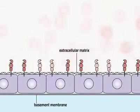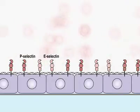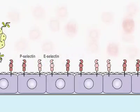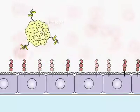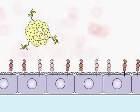Blood vessel endothelium at sites of infection expresses selectin molecules, P-selectin and E-selectin. Leukocytes, such as neutrophils, express the ligand for selectins in the form of the sialylated Lewis X carbohydrate, S-lex.